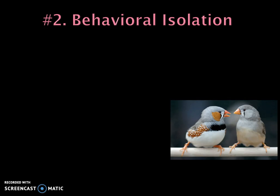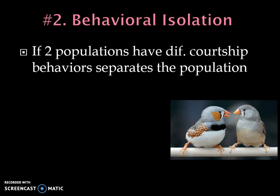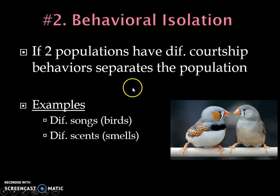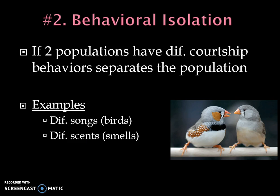Another type of barrier is a behavioral barrier, called behavioral isolation. To make offspring, organisms are very social creatures. If two populations develop different courtship behaviors, that will separate them. For instance, birds have mating calls, and they depend on those calls, their appearance, their sounds, and their smells. If those behaviors change — whether songs or scents — that could cause the population to no longer reproduce with one another, eventually diverging into two different populations and two different species.